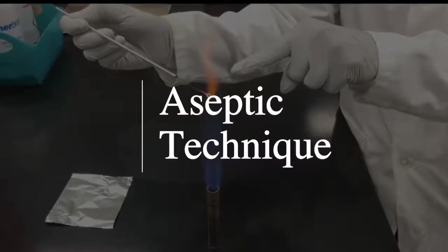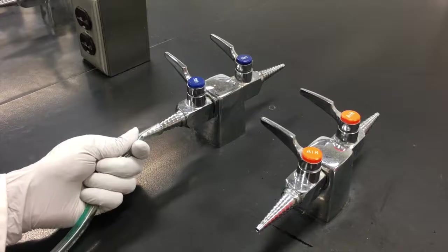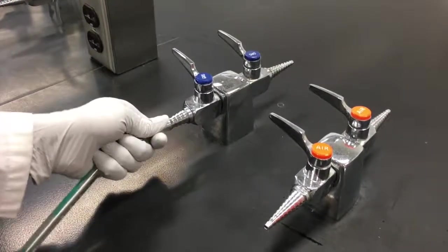Aseptic technique requires the use of a Bunsen burner. In order to start, attach your Bunsen burner to the blue valve that says gas.